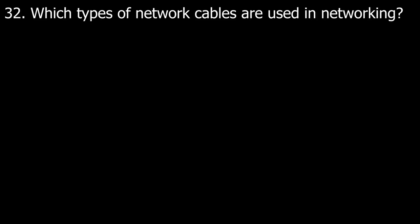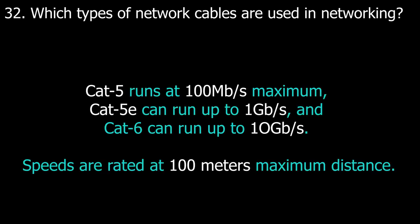Question number thirty-two: which types of network cables are used in networking? Cat5 runs at 100 megabits per second maximum. Cat5e can run up to 1 gigabit per second. Cat6 can run up to 10 gigabits per second. Speeds are rated at 100 meters maximum distance.